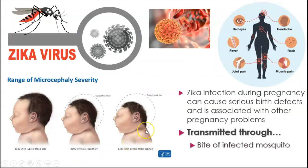Zika virus is another one that can be transmitted by mosquitoes. It's been around for a while, but during a bad outbreak a few years ago, they found that if a woman was pregnant when she got infected, it could cause serious birth defects called microcephaly. Microcephaly is basically when the brain or the head doesn't grow enough, leading to developmental disorders and various other problems. It's also transmitted through the bite of infected mosquitoes.